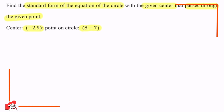This question wants us to find the standard form equation of a circle with the given center, which is (−2, 9), and that passes through the given point, which is (8, −7). First, we should know what the standard form of the equation of a circle is: (x − h)² + (y − k)² = r², where (h, k) is the center.